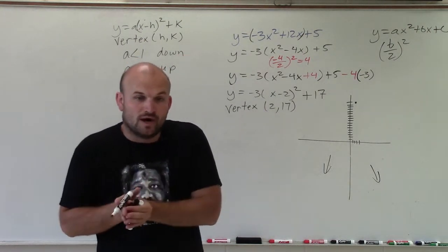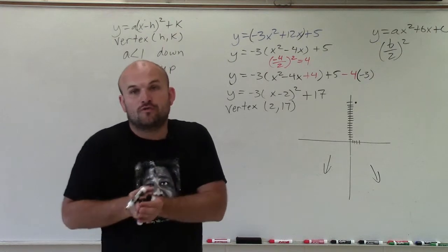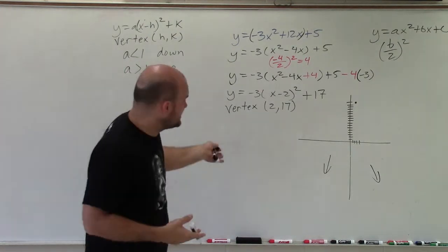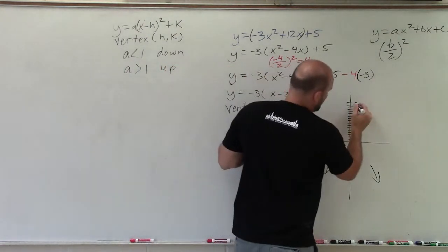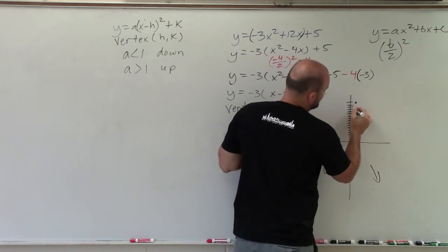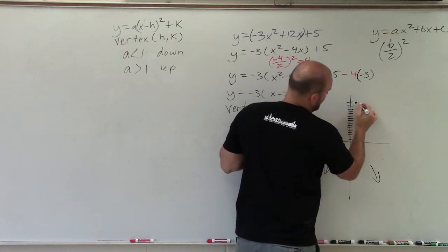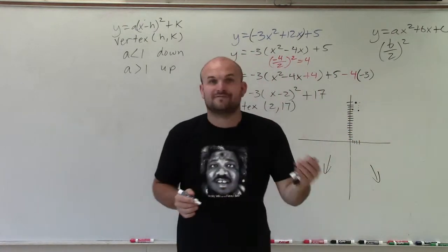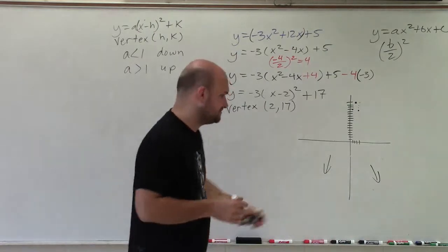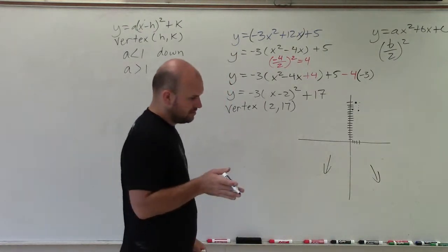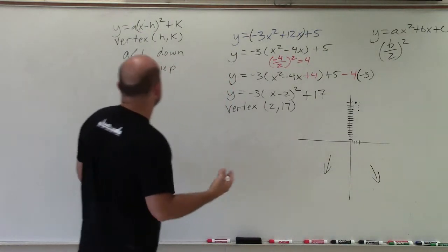So instead of going over 1, up 1, I'm going to have to go over 1, up 3. Well, in this case, since it's negative, I have to go over 1, down 3. 1, 2, 3. And over 1, down 3. 1, 2, 3. And then, if I go over 2, I have to go down 6. Down 4. All right. Well, let's just go.